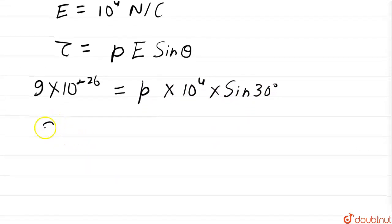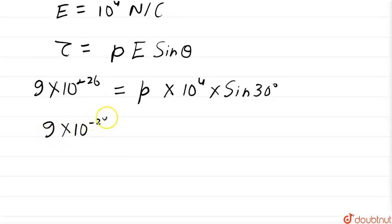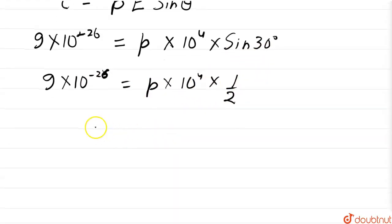Now, 9×10^(-26) equals p into 10^4 multiplied by 1/2 because sin 30 is 1/2.